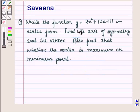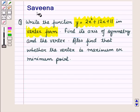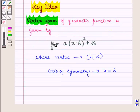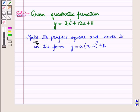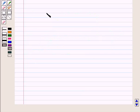Now let us start with the solution of the given question. Here we are given the quadratic function y is equal to 2x squared plus 12x plus 11, and we have to write it in vertex form. From the key idea we know that the vertex form of a quadratic function is given by y is equal to a into x minus h whole square plus k. We will make its perfect square and write it in that form.